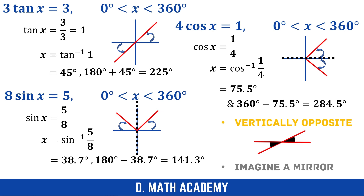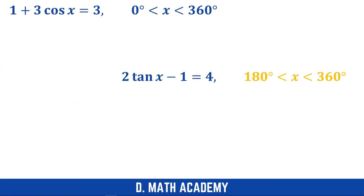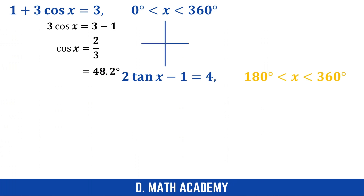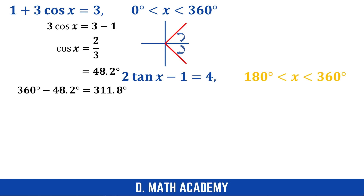Moving on to Example 2 — the major difference here is that there are additional values, so you must shift the extra value first before dividing. For the first question, there is an excess value of 1; shift it to get 3 cos x = 3 − 1 = 2, then divide by 3: cos x = 2/3. Cosine is positive, so we have results in the first and fourth quadrants. From cos⁻¹(2/3) you get 48.2 degrees, and the other result is 360 − 48.2 = 311.8 degrees.